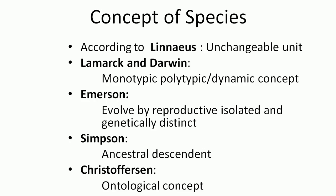Lamarck and Darwin put forward some concepts of species. They gave two concepts: the monotypic species and the polytypic species, also known as the dynamic species concept.